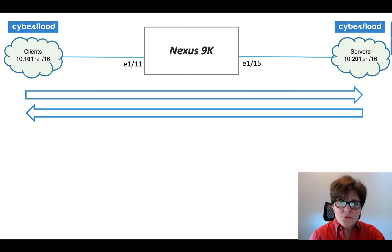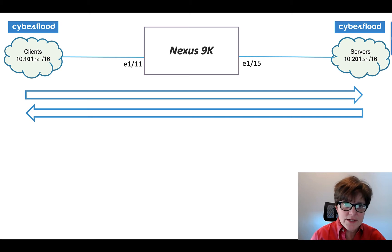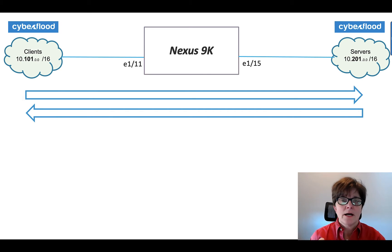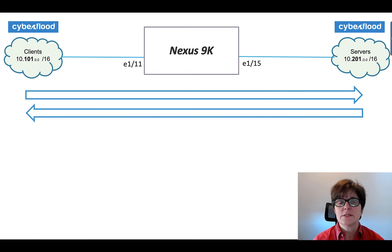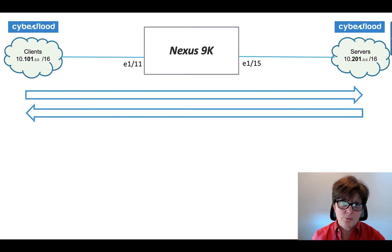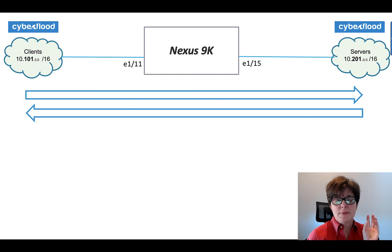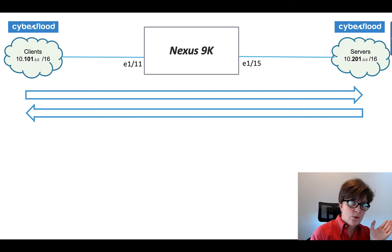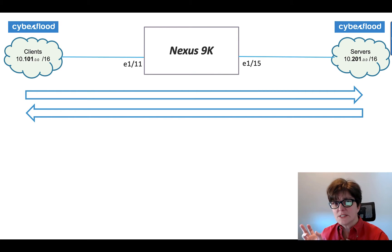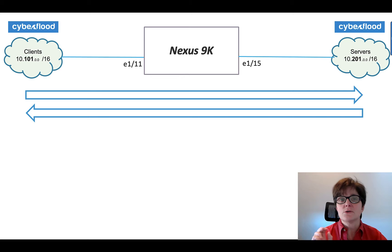From a CyberFlood perspective, what we're going to do today is take a Cisco Nexus 9K. I've got it cabled to 10 gig ports off to the CyberFlood C100 appliance. We'll see a picture of the C100 appliance. Going to create clients on one side — that's going to be on the 10.101 subnet — and the server is going to be on the 10.201 subnet.